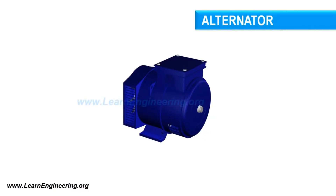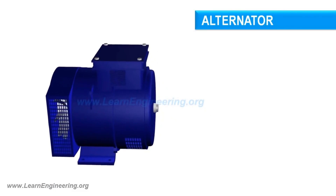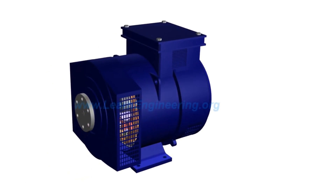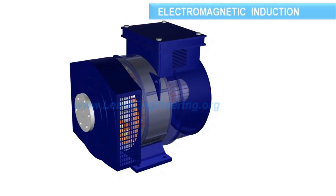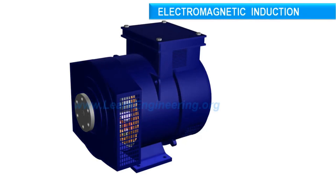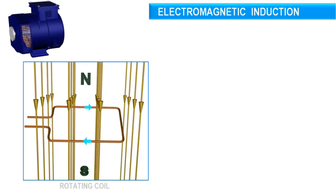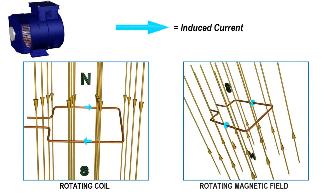Alternators are the workhorse of the power generation industry. They are capable of generating AC power at a specified frequency, and are also called synchronous generators. Electricity is produced in alternators by electromagnetic induction. To generate electricity in a coil, either the coil should rotate with respect to the magnetic field, or a magnetic field should rotate with respect to the coil.